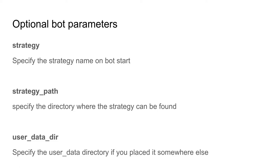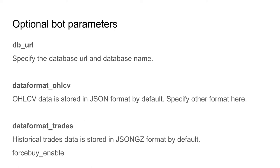You can also use the user data directory option if you want to use multiple bots on the same server but don't want to integrate all their data and databases into one single directory. The dburl option can be used if you want to give your trading database a different name than the default FreqTrade database name. This is convenient when using multiple bots and you want to give each bot its own specific database instance and name. If that's not a problem, you don't need to use this option.